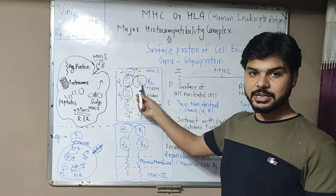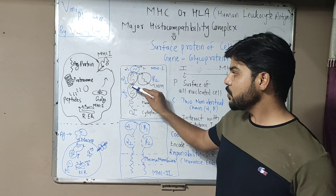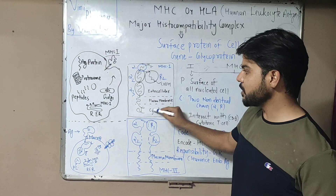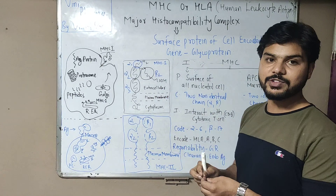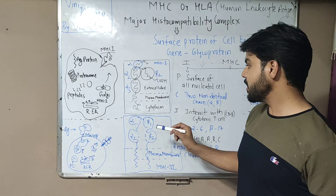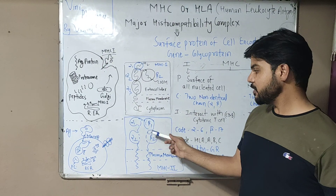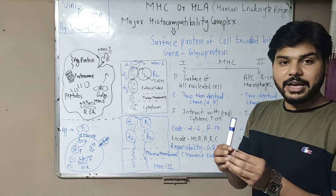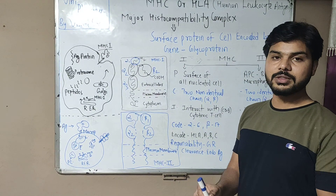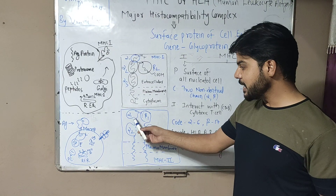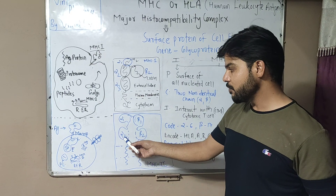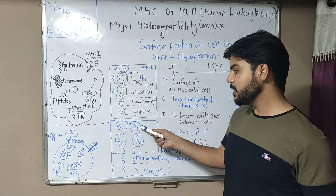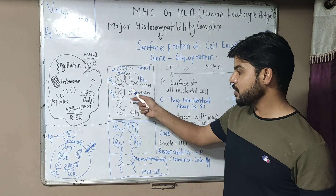The alpha chain includes alpha 1 (variable region), and alpha 2 and alpha 3 (constant regions). The beta 2 domain is a very small chain — you can express its weight in Daltons. For MHC Class 2, both chains have domains: alpha 1, alpha 2, beta 1, and beta 2. Both chains span the cytoplasm, plasma membrane, and extracellular part.